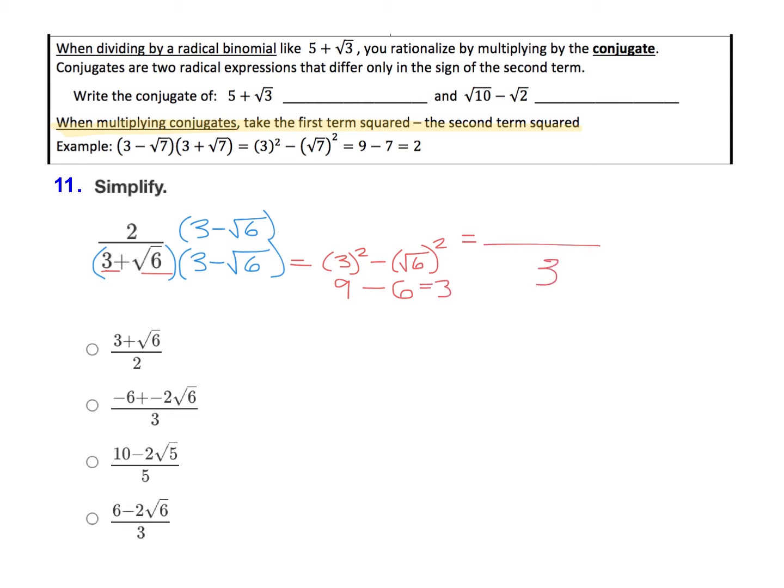Up top, we just do the distributive property here. So we're going to do 2 times 3, which is 6. And then 2 times negative root 6 would be negative 2 root 6.